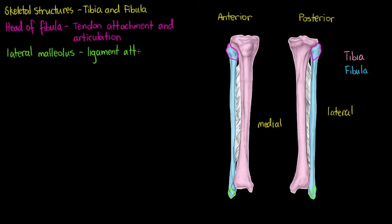So it's forming a joint, and if it's forming a joint we're also going to see ligament attachment in that area as well — ligament attachment and articulation. I've highlighted it at the bottom of the fibula. The head of the fibula and lateral malleolus are the only two real points on the fibula we need to focus on for an anatomy one level of knowledge.